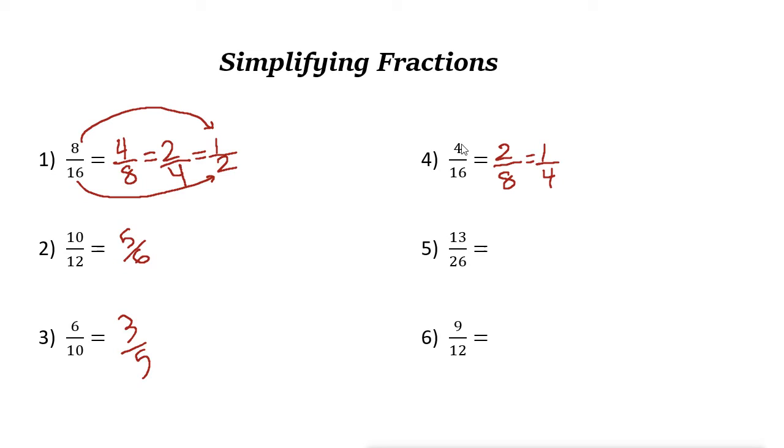But you could also divide these two by 4 in the beginning. 4 divided by 4 is 1. 16 divided by 4, the answer is 4. 1 fourth equals 4 over 16.